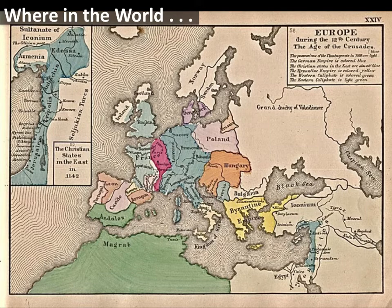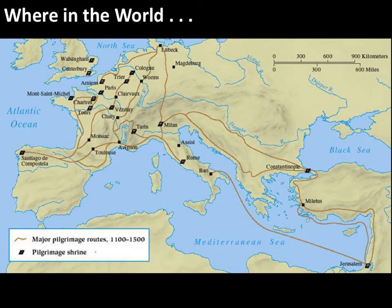On this map, there were a number of pilgrimages throughout the medieval period, especially during the Romanesque period. There are quite a few routes that people traveled to these really important religious sites. The most important religious site is on the very far eastern side in Jerusalem, but there were also many other sites throughout Europe that became very popular as pilgrimage sites.